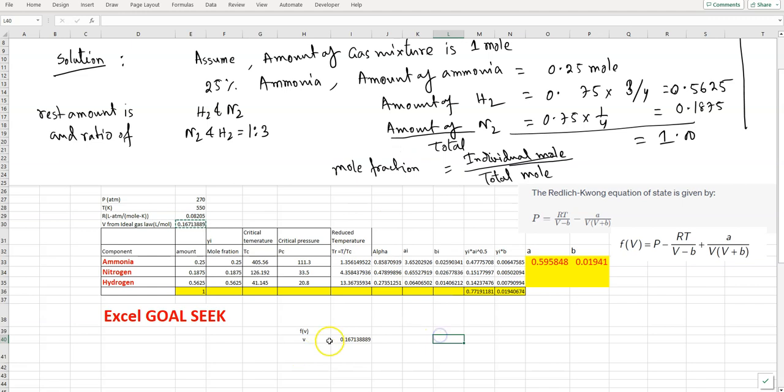f(V) equals P minus RT/(V-b) plus a/(V(V+b)). So first, P minus RT - that's R times T divided by V - then divided by V minus b.